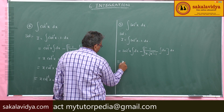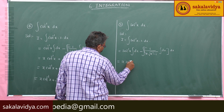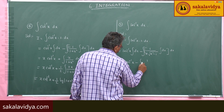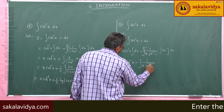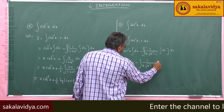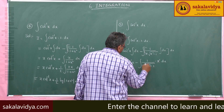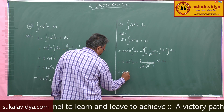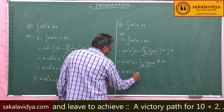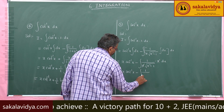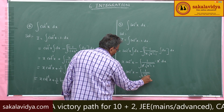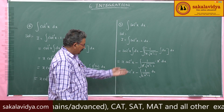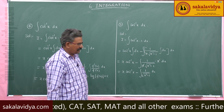This is x secant inverse x, minus integral of 1 by x root of x square minus 1 into x dx. The x and x get cancelled. So we have x secant inverse x minus integral of 1 by root of x square minus 1 dx. This is a standard formula, that is nothing but cosh inverse x.